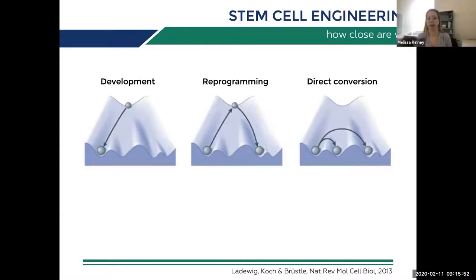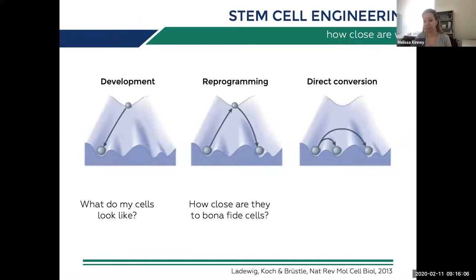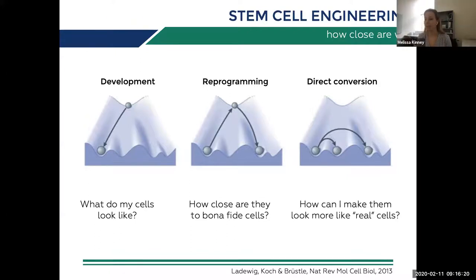There are three key questions that constantly come up. First, what do my cells actually look like at any given state — how close are they to real bona fide cells? If I'm trying to make an induced pluripotent stem cell into a cardiac or blood cell, am I there yet? And if not, how do I get them to look more like real cells — what can I manipulate in the gene regulatory network or cell signaling context?